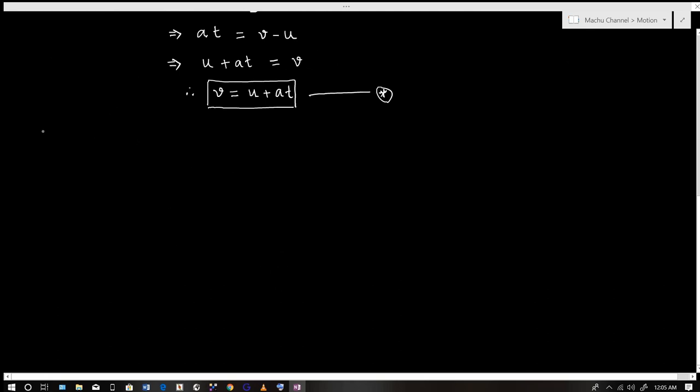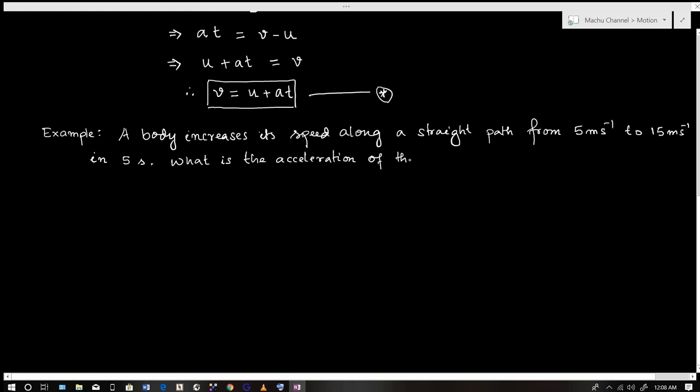Example: A body increases its speed along a straight path from 5 meters per second to 15 meters per second in 5 seconds. What is the acceleration of the body?